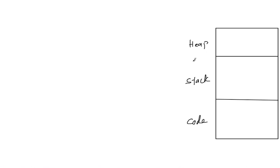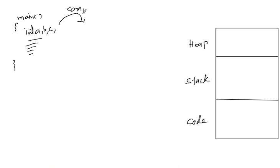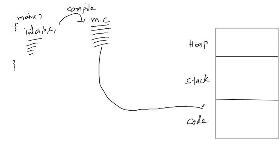Now let us see how these three sections are used by our programs. If I write a program, I may be declaring some variables. Then I have to compile the program, which gives me the machine code of the program. Now for execution, we use that machine code — this C language code is compiled and converted into machine code. This process of bringing the machine code into the code section is called loading.